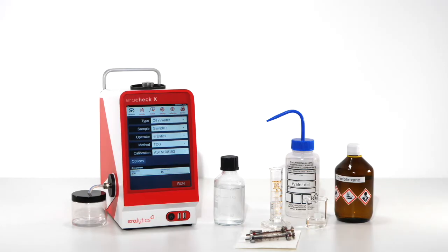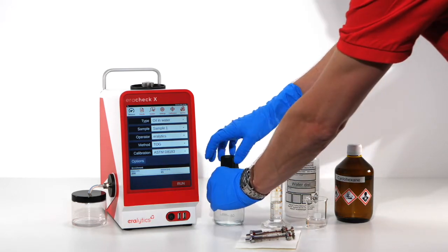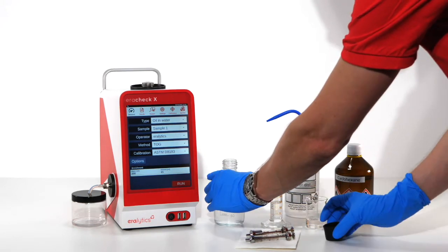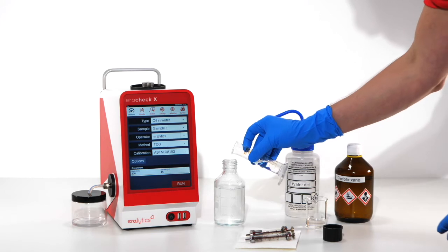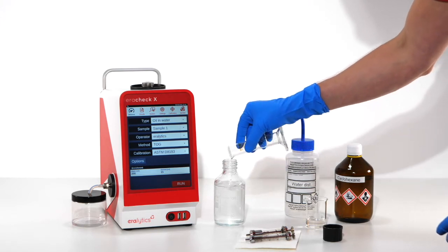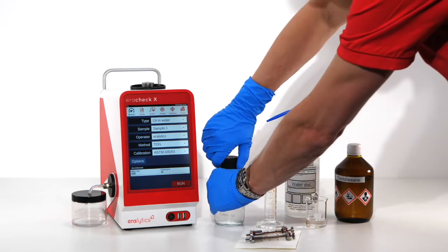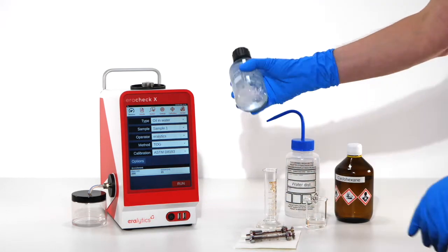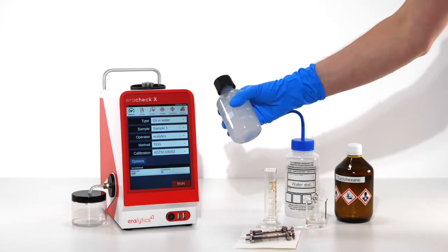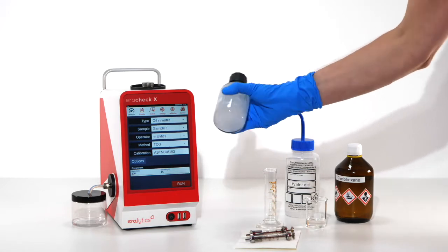Pour 50 ml cyclohexane into the sample bottle containing 200 ml of water sample. Close the bottle and shake it vigorously for one minute. Then wait until the phase separation is completed.